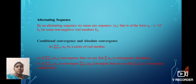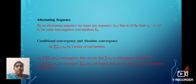Next, we define conditional convergence and absolute convergence. Let the summation from n equal to 1 to infinity of An be a series of real numbers. We consider two conditions. First condition: if the summation from n equal to 1 to infinity of |An| converges, then we say that the summation of An converges absolutely. Second condition: if the summation from n equal to 1 to infinity of An is convergent but the summation of |An| is divergent, then we say that summation An is conditionally convergent.